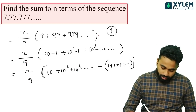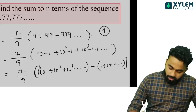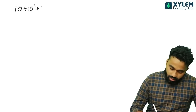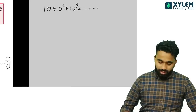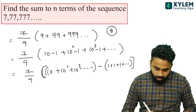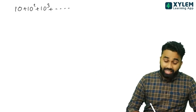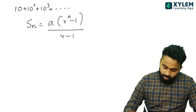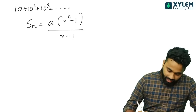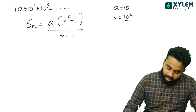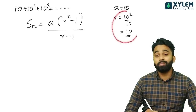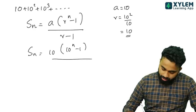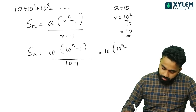This is the sum. Let me write the sum: 10, 10 squared, 10 cubed, etc. This is a GP. Using the GP sum formula: a into R raised to n minus 1 by R minus 1. So, Sn is equal to 10 into 10 raised to n minus 1 by 10 minus 1, which equals 10 into 10 raised to n minus 1 by 9.